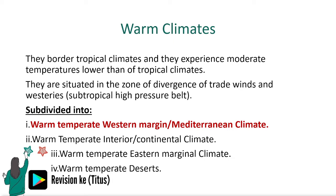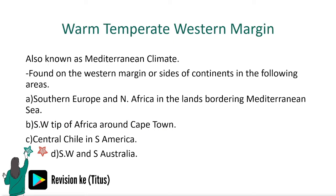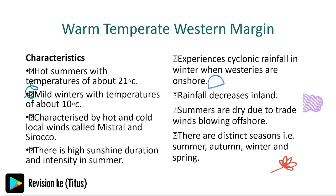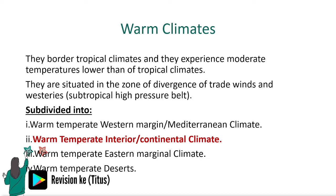The warm temperate western margin, or Mediterranean climate, is found on the western margins of continents: southern Europe and northern Africa in the lands bordering the Mediterranean Sea, the southwest tip of Africa around Cape Town, central Chile in South America, and southwest and south Australia. A notable feature at this level is that we now have seasons.